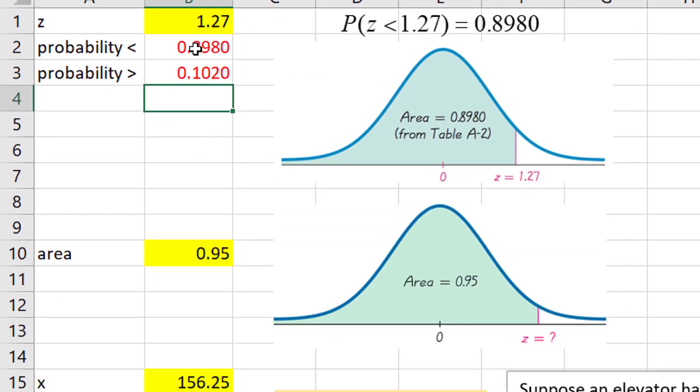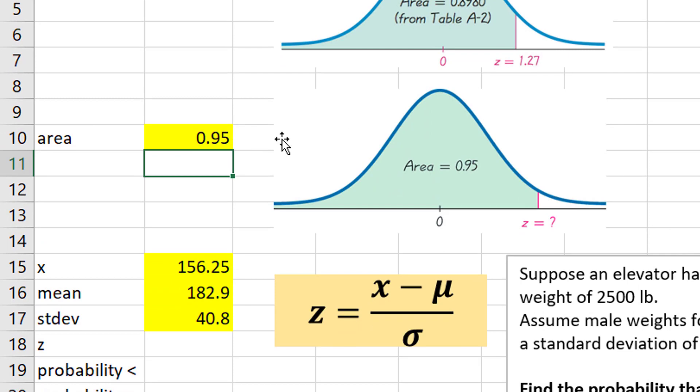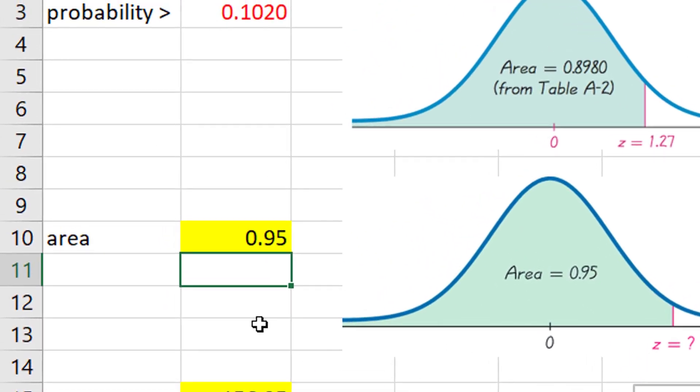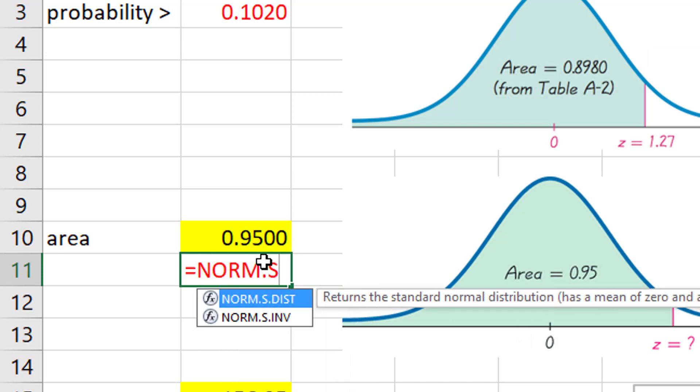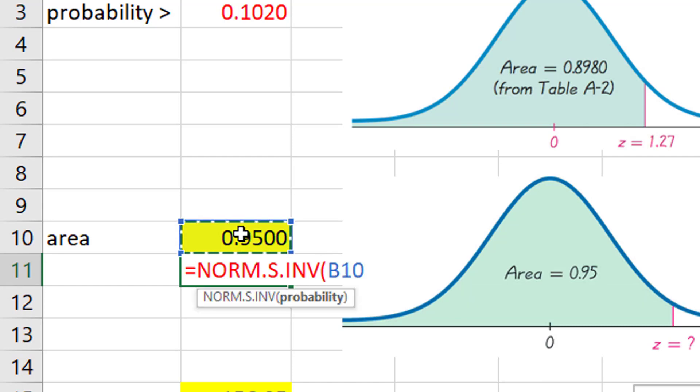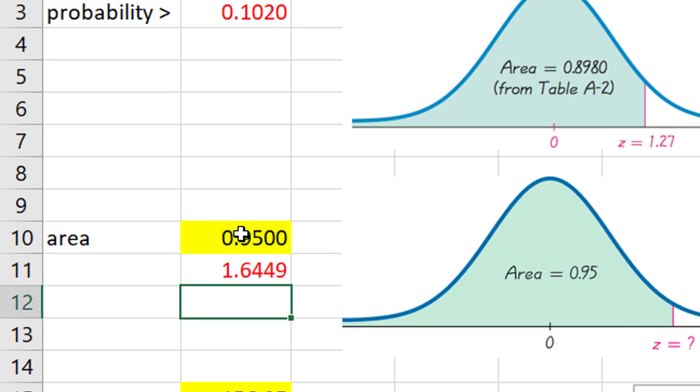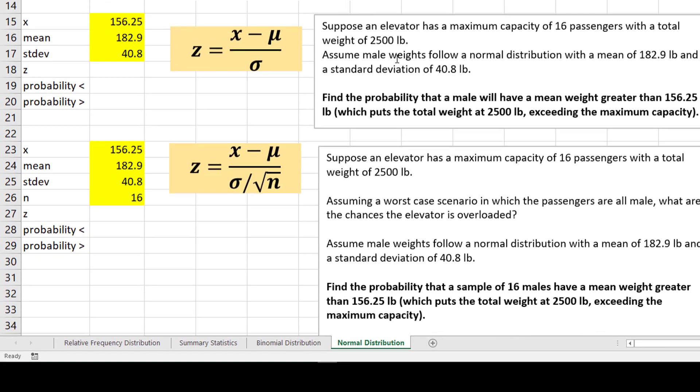Sometimes you're given an area and you need that Z value. Excel will do this for you, or you could look up and find within the table. Remember these are four digit values, so you could look up and find 0.9500 from the table, or Excel has the NORM.S.INV, and B for the inverse. Now you put the probability in, close your parentheses, and that tells me what that Z value would actually be.